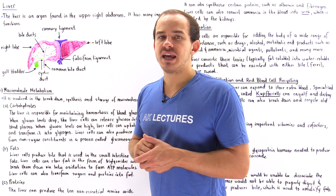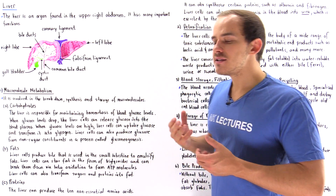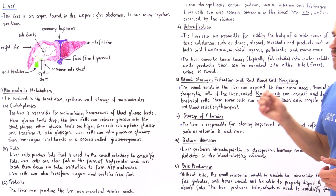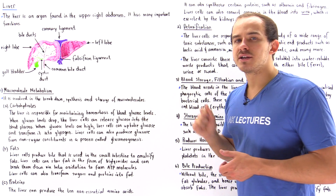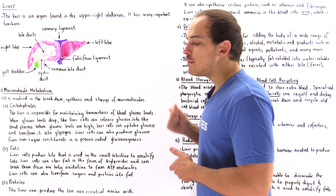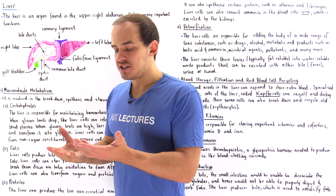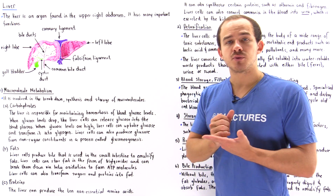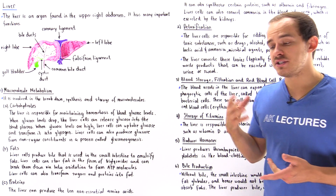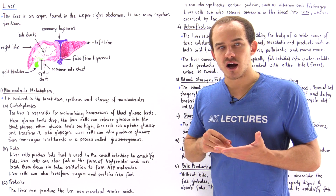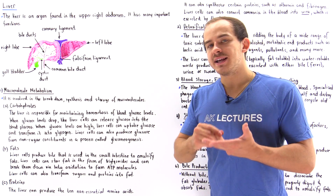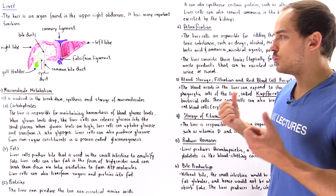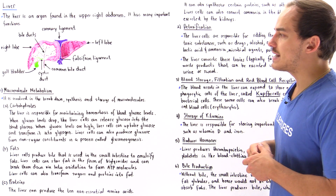Function number one: the liver functions in macromolecule metabolism — the metabolism of carbohydrates, fats, and proteins. This includes the synthesis, the breaking down, and the storage of these molecules inside our body.